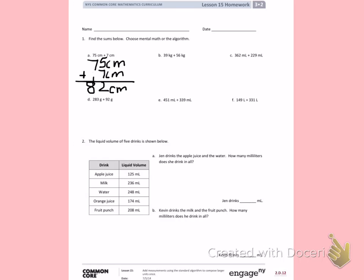B. 39 kg plus 56 kg. I'm going to use the standard algorithm and line up my numbers as so. 9 plus 6 is 15. 3 plus 5 is 8, plus 1 is 9. My total is 95 kg.